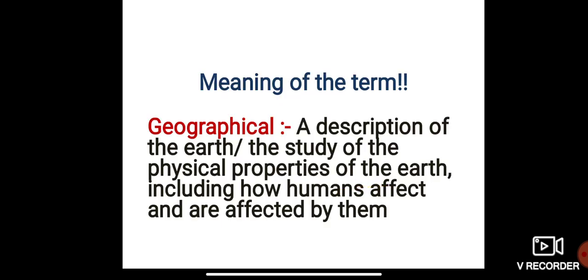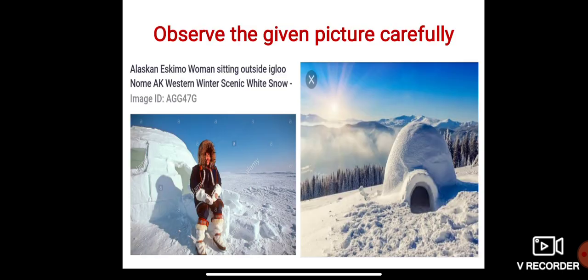The word 'geographical' means a description of the earth — the study of the physical properties of the earth, including how humans affect and are affected by them. So geographical refers to a description of the earth or the study of its physical properties, including how humans effect and are affected by them.